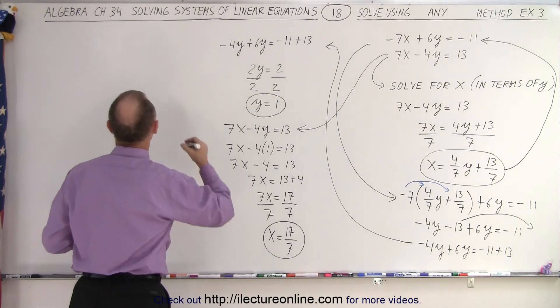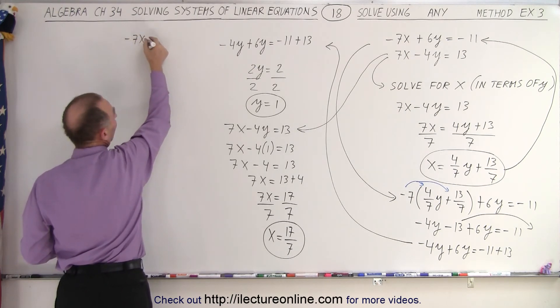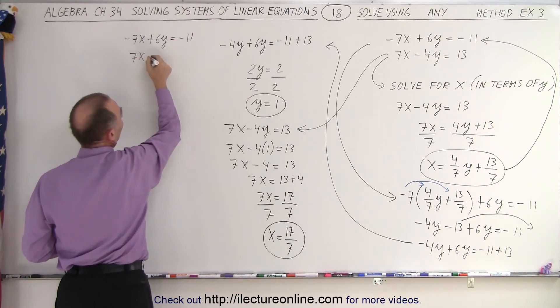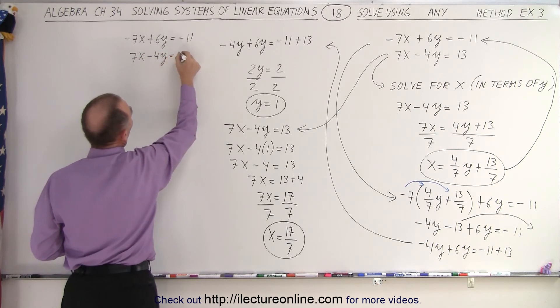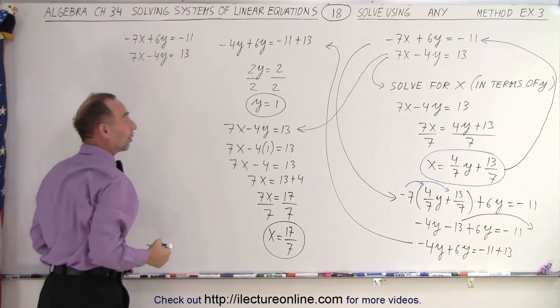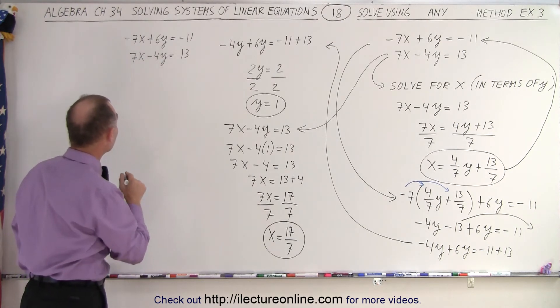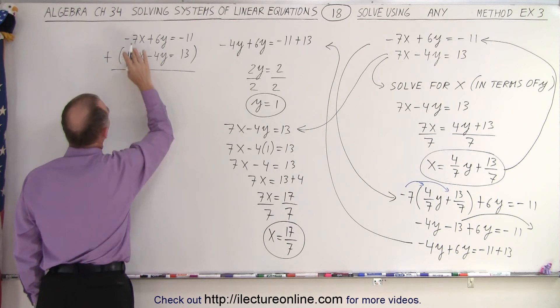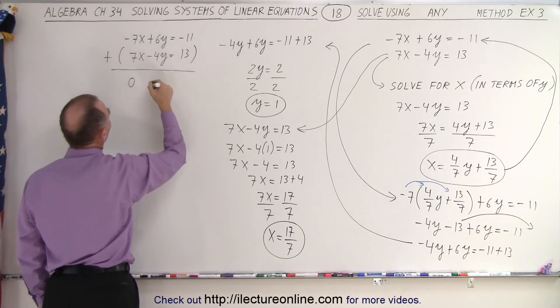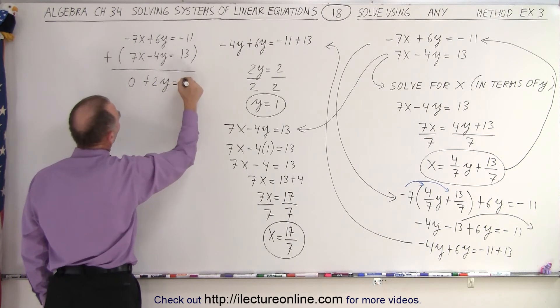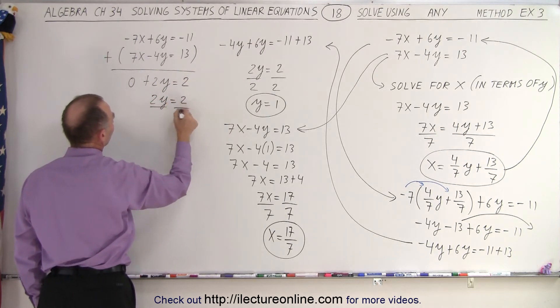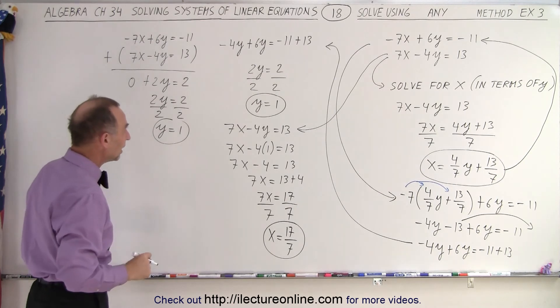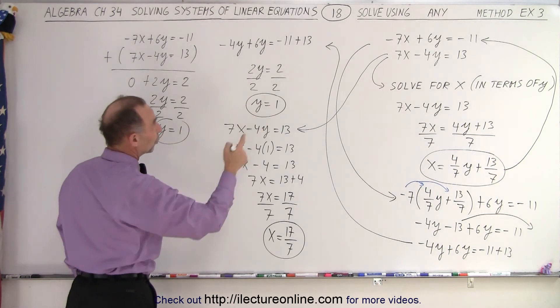So here what we're going to do is put them back up here again. So we have minus 7x plus 6y equals minus 11 and 7x minus 4y equals a positive 13. And notice since I already have the x variables with the same numerical coefficient and one being positive and one being negative, all I have to do is add the two equations together to eliminate one of the variables. And so I end up with, that's 0. Here we have plus 2y is equal to 2. So 2y equals 2. Divide both sides by 2, I get y equals 1. Wow, just like that. Very simply, I get to this answer already. All I have to do now is plug that back into one of the two equations.